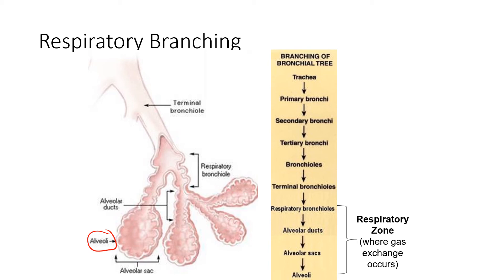So that is the pathway of oxygen into the lungs. To remove CO2 from the lungs, if we start with the pulmonary capillaries that surround these alveoli, we in fact reverse this process — traveling from alveoli to bronchioles, tertiary bronchi, secondary bronchi, primary bronchi, trachea.